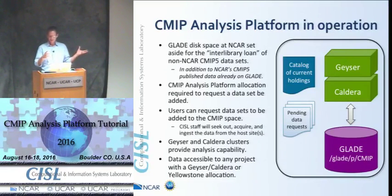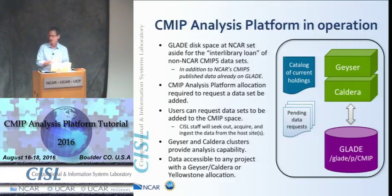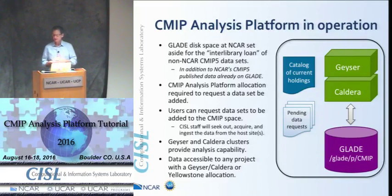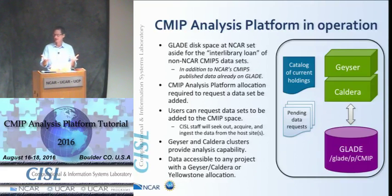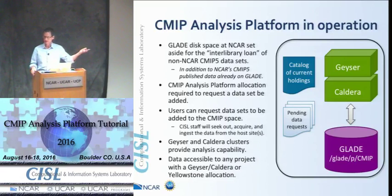In effect, the analysis platform is basically a bubble drawn around stuff we already had: Geyser and Caldera, the disk space. We added a catalog of current holdings — right now it's a simple Drupal web page run on a script across the disk space, but we may look at how to improve that. We have a pending data request system where you can either select from a website of options or submit a ticket to our help desk. The best way is to submit a help ticket and say: I'd like to get this data in the analysis platform for this project. But the first thing is to get an allocation — once we know you're an eligible and interested researcher, that's your first step. It should take you 10 minutes and you should have that project set up within a day or so.